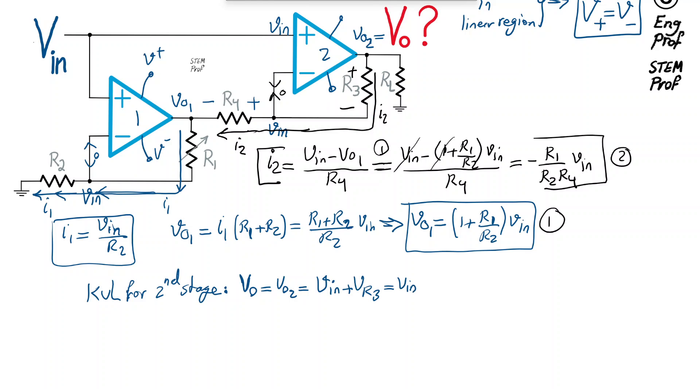I'm going to use equation 2 that defines I2 as a function of V-in, so substituting for I2 from equation 2, we get V-in, and then plus R3 times minus R1 divided by R2 R4 times V-in.